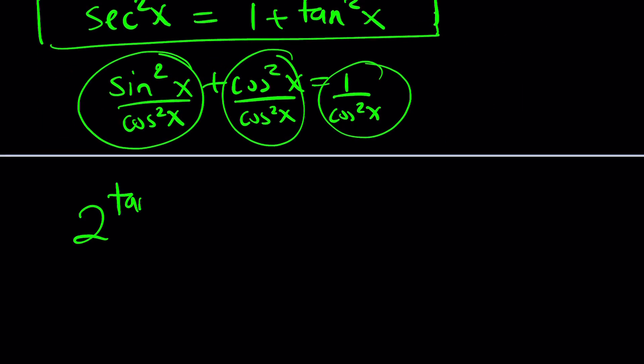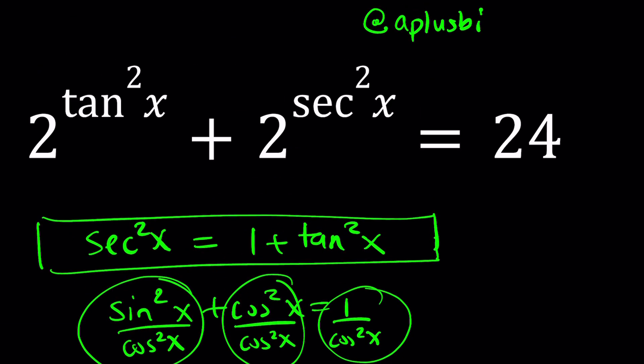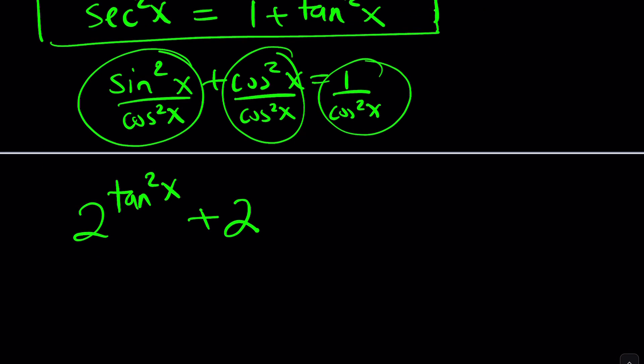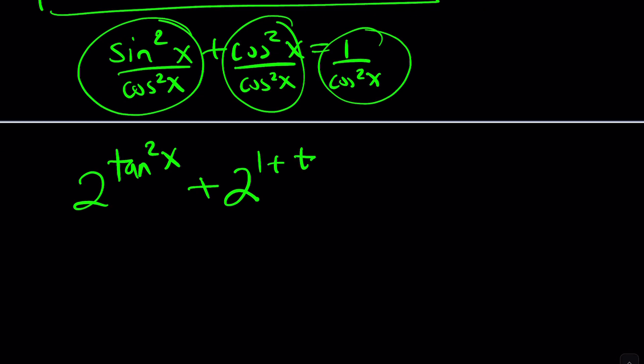So tangent squared, leave that alone, and replace secant squared in this exponent with 1 plus tangent squared of x. Great. I'm trying to make my t's like that with a little tail so that they don't mix with the plus sign. This is equal to 24. Great. Now, here's what we're going to do. Properties of exponents. Super helpful. Memorize them. Use them all the time.